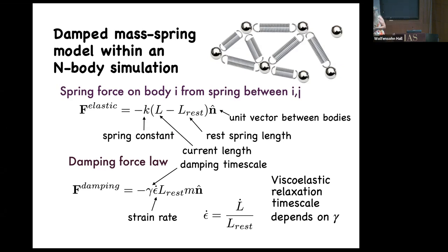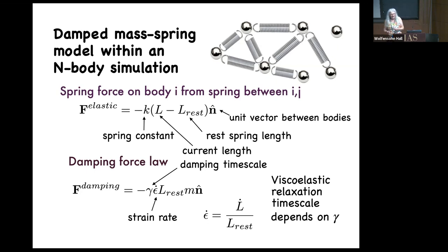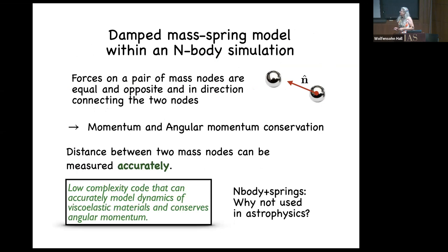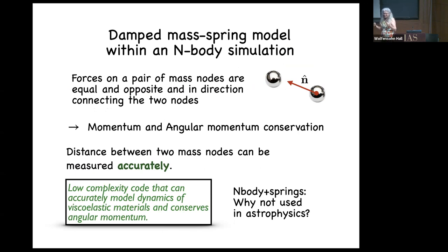This type of model is called a viscoelastic model. If you got rid of the damping force, it would just be an elastic model. You can characterize a viscoelastic model by a timescale known as the viscoelastic relaxation timescale — you see that come up in some tidal theories. The nice advantage is that all the forces are applied along the vector connecting two point masses, which ensures angular momentum conservation. The distance between every point mass can be measured extremely accurately, to double-precision level.